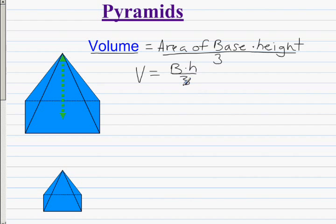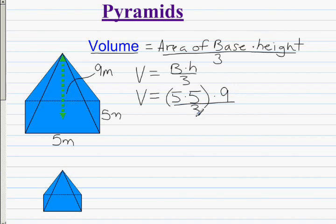If we give this example some dimensions, 5 meters by 5 meters at the base, and the height of the pyramid is 9 meters, then we plug into the formula. Volume equals the base is 5 meters times 5 meters, the height is 9 meters, and we divide that by 3 because it's a pyramid.